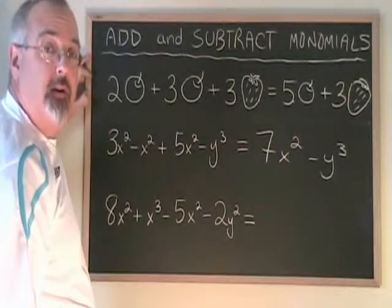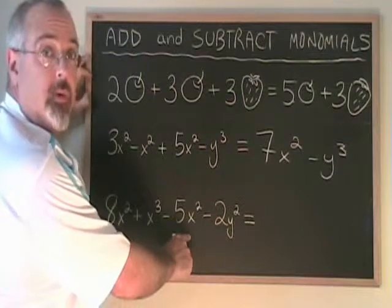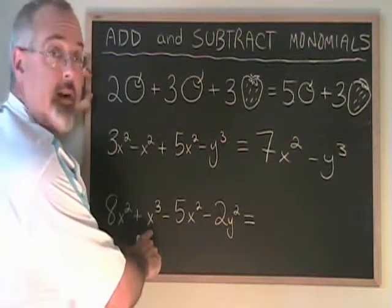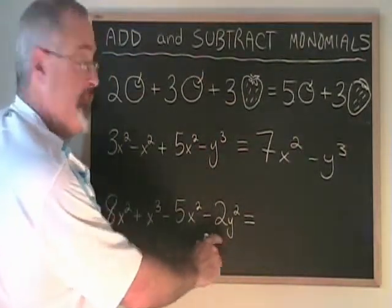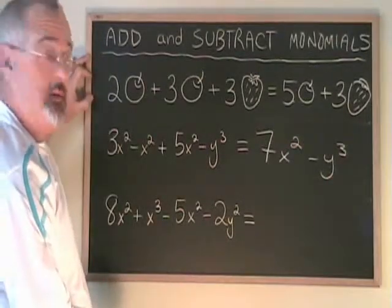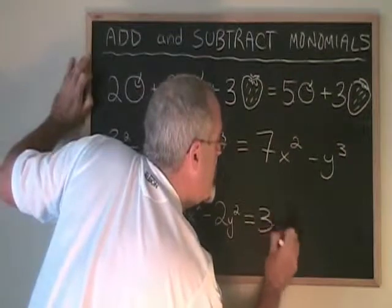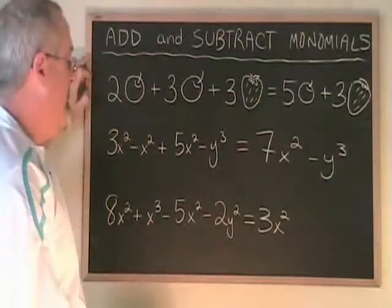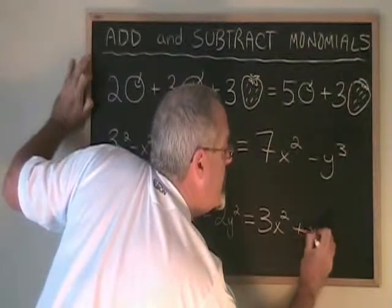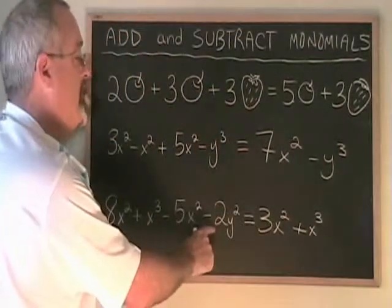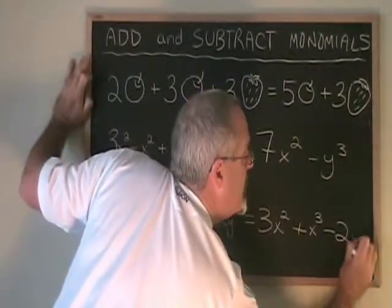This time we have three different types of term: eight x squared minus five x squared, only one x cubed term, and only one y squared term. Let's combine our x squared terms: eight x squared minus five x squared equals three x squared. The plus x cubed is kept separate, and the minus two y squared is also kept separate.